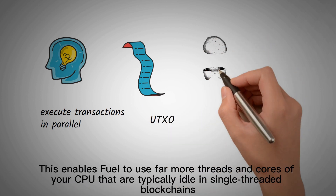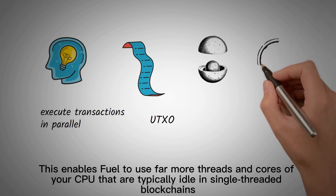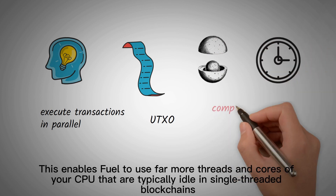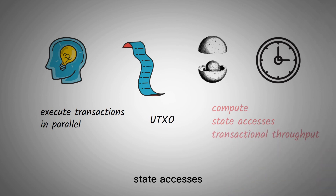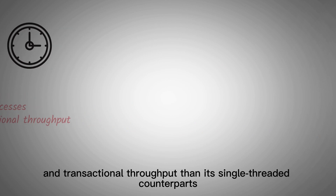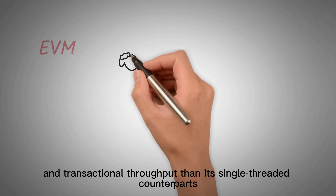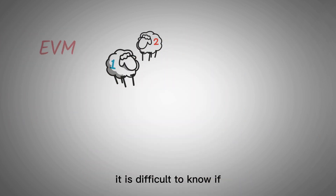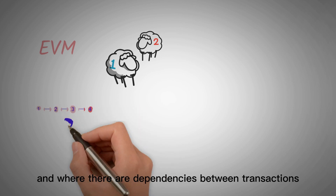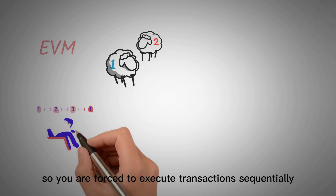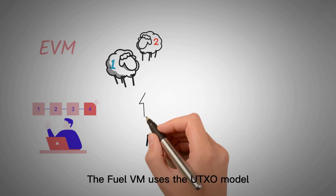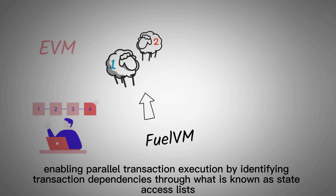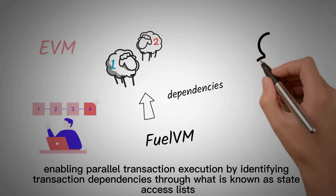This enables Fuel to use far more threads and cores of your CPU that are typically idle in single-threaded blockchains. As a result, Fuel can deliver far more compute, state accesses, and transactional throughput than its single-threaded counterparts with the EVM. It is difficult to know if and where there are dependencies between transactions, so you are forced to execute transactions sequentially. The Fuel VM uses the UTXO model, enabling parallel transaction execution by identifying transaction dependencies through what is known as state access lists.